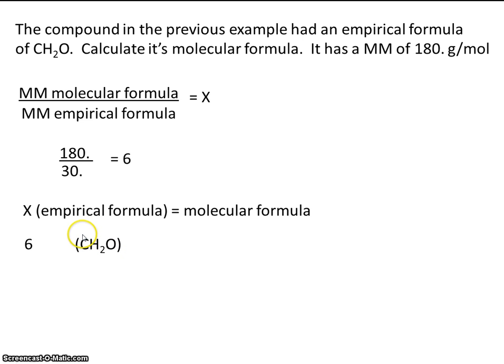6 times the empirical formula. So instead of having 1 carbon, 2 hydrogens, and 1 oxygen, we'll have all of these multiplied by 6. So it will be 6 carbons, 12 hydrogens, and 6 oxygens.